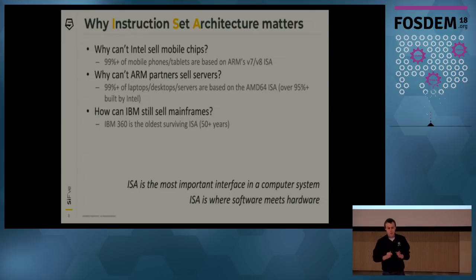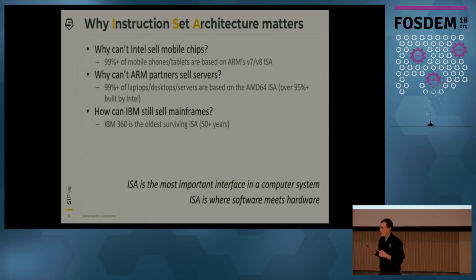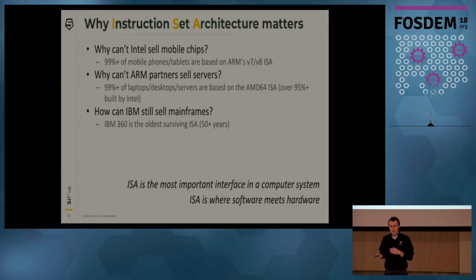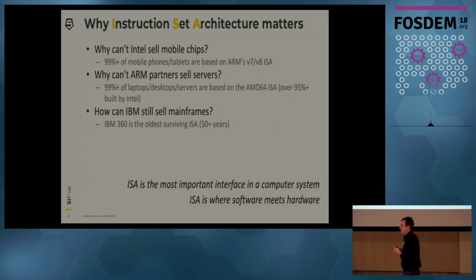So why are ISAs important? The ISA is the most important interface in the computer. It's the reason that Intel can't break into the mobile market — mobile software is largely ported for ARM systems. Similarly, it's the reason that ARM can't move into the server market, because server software largely expects Intel systems, despite large investments in software infrastructure over the years.